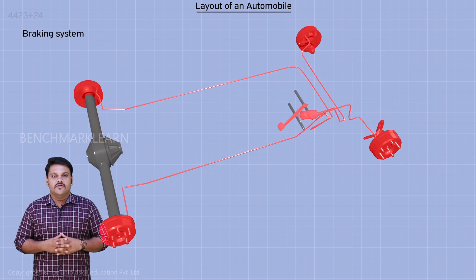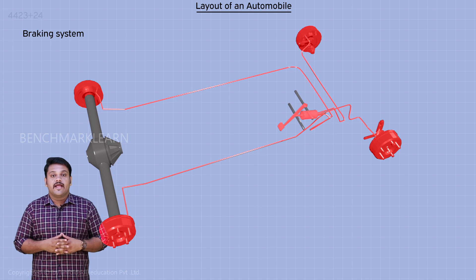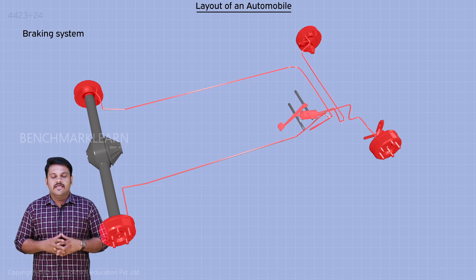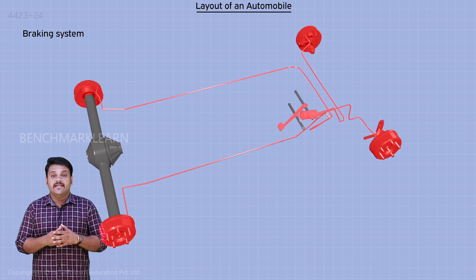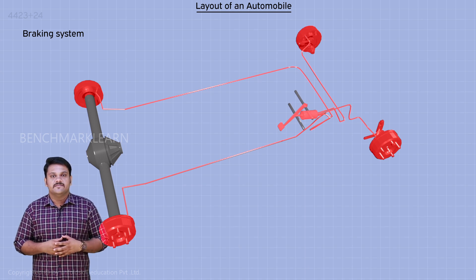Braking system. Used for slowing down and stopping the vehicle. The various systems of an automobile will be explained in detail in the forthcoming videos.